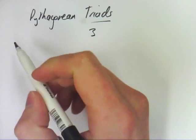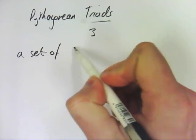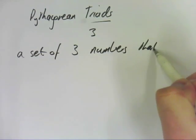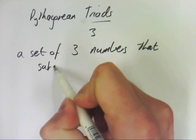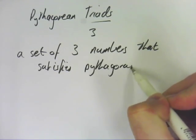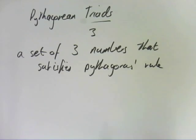A Pythagorean triad is a set of three numbers that satisfies Pythagoras, so it satisfies his rule.